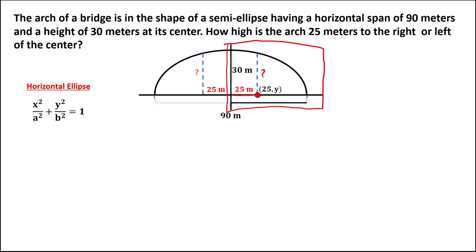therefore, this side, since the length of the ellipse is 90 meters, this is equal to 45 meters, half of the ellipse. And these are the values we're going to use to solve for this problem.